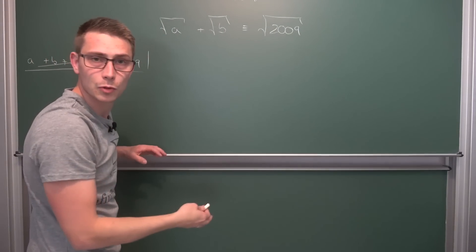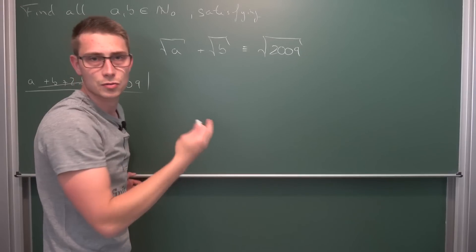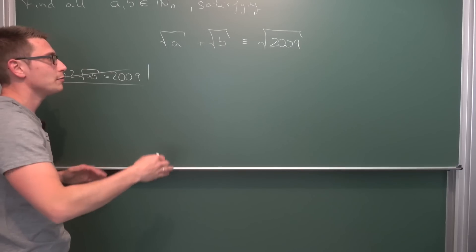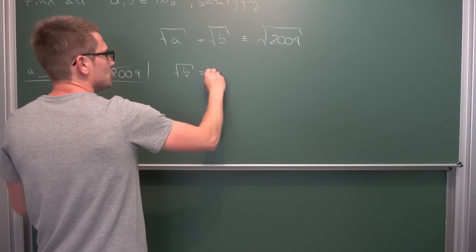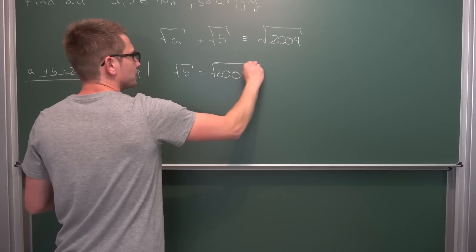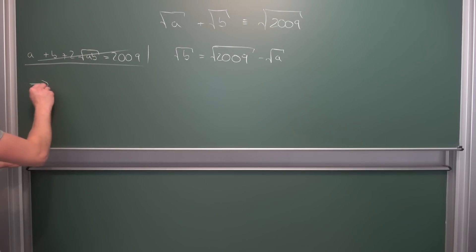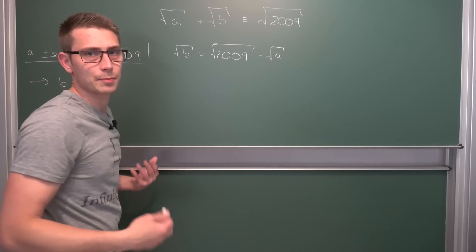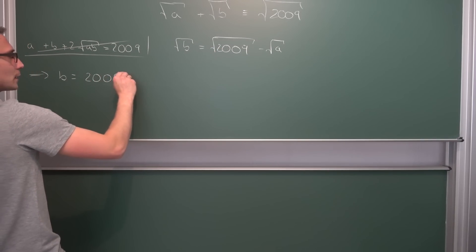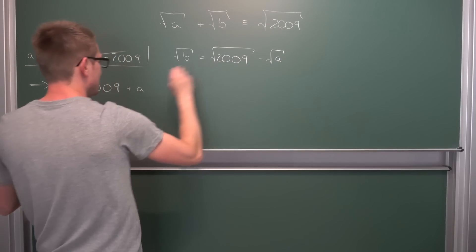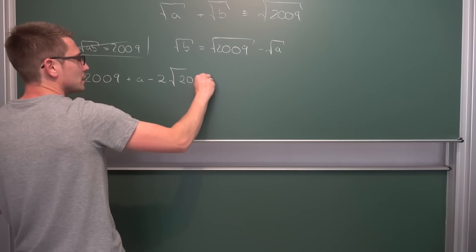We are going to subtract square root of a on both sides. The problem is symmetric, so it really doesn't matter, and all the arguments we do in the next few steps also hold for a in general — we can do everything analogously at the end. So if we subtract square root of a on both sides, we get square root of b equals square root of 2009 minus square root of a. Squaring both sides, on the left-hand side we get b isolated. So b equals, by the binomial theorem: 2009 plus a minus two times the square root of 2009 times a.